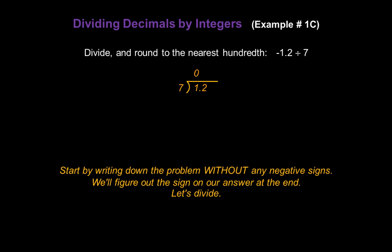How many times now does 7 go into 12? One time. 7 times 1 is 7, and 12 minus 7 gives us a remainder of 5.